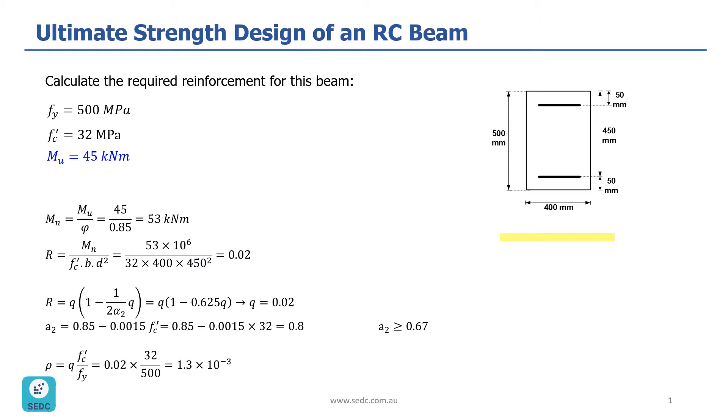As you can see, the width of this section is 400 millimeter, and thickness of the section is 500 millimeter. Also, the cover for steel reinforcement in tension and compression is 50 millimeter, and D, which is the distance from the center line of the steel reinforcement in tension from the extreme compressive fiber, is 450 millimeter.